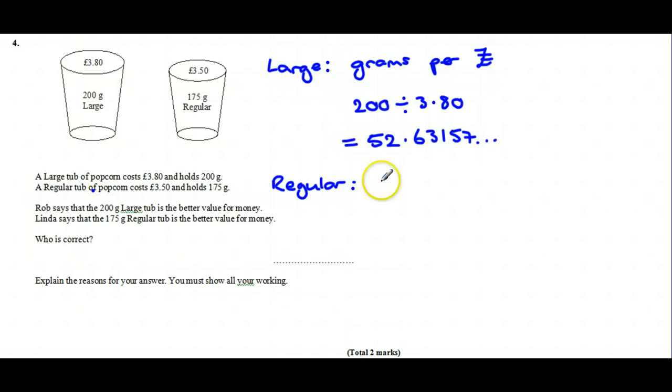For the regular tub, we do the same calculation. The number of grams is now 175. Divide that by the price you pay, which is £3.50, and that comes to exactly 50 grams per pound.